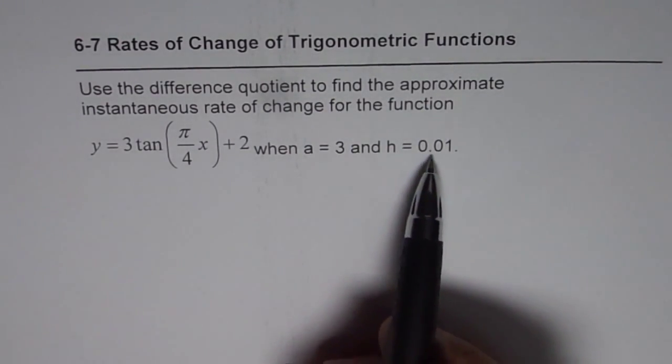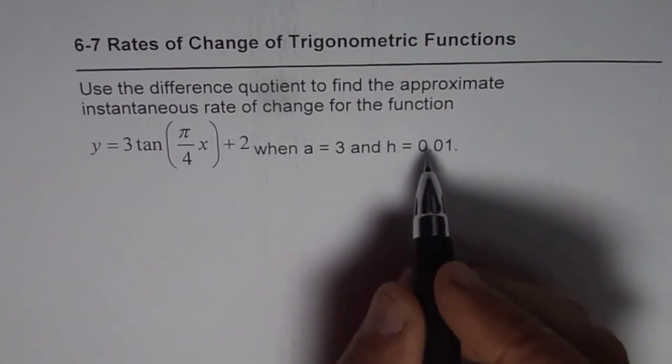Now, when we have h of 0.01, we are trying to find the difference quotient and instantaneous rate of change for 2 decimal places. So it will be accurate to 2 decimal places. What is the formula?